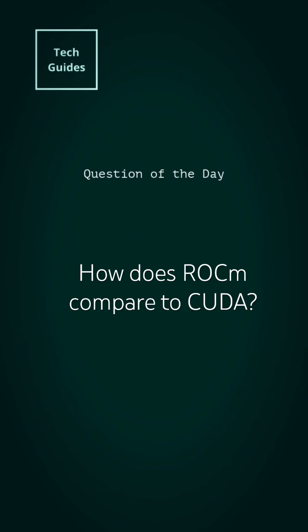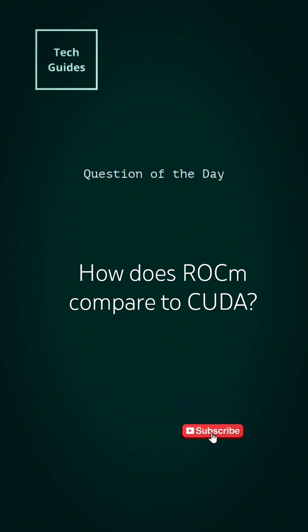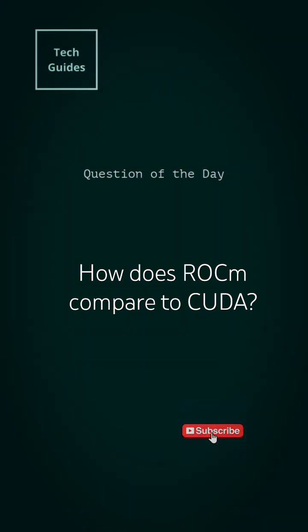Even though CUDA is proprietary and ROCm is open source, they're both kind of doing the same thing — running AI models on your GPU.